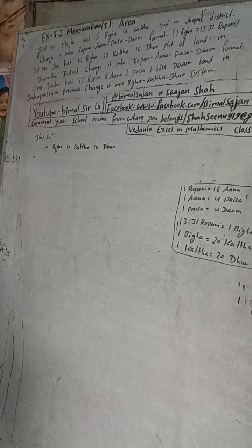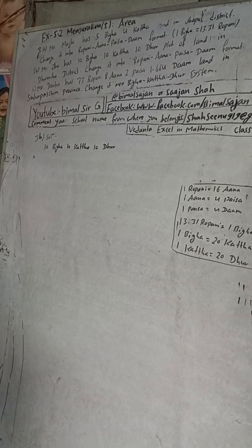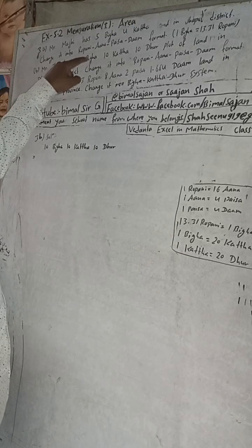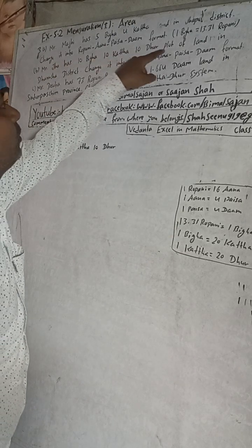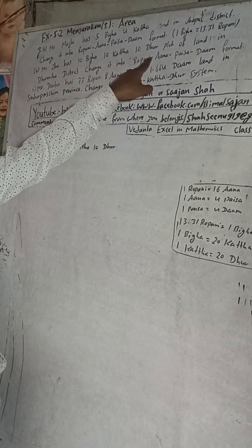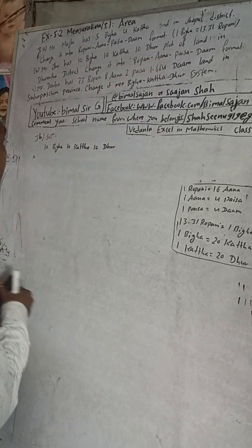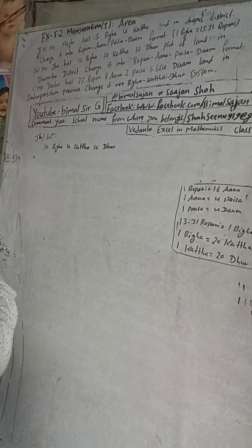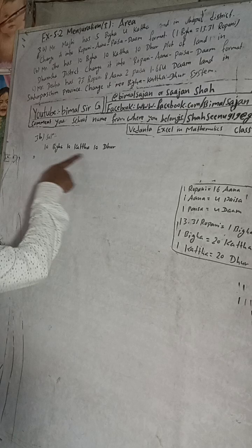Hi class 9 and 10 students, welcome back to Vimal Sarji YouTube channel. This is question number 3B, exercise 5.2, mensuration first part - area, Vedanth Excel in Mathematics class 9. The question is: Mr. Jha has a 10 bigha, 10 katha, 10 dhur plot of land in Dhansha district. Change it into ropani, ana, paisa, dam format.